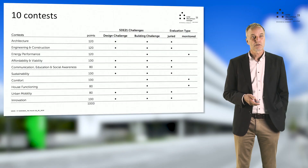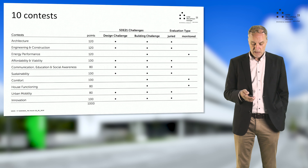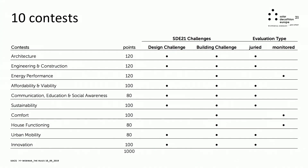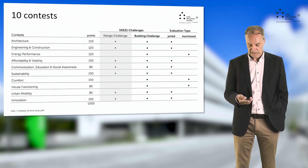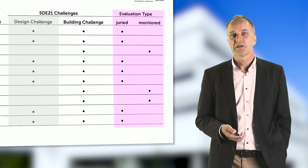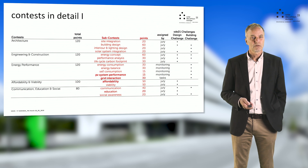As it is a Solar Decathlon, we have 10 contests, and you have recognized all these contests with their points in the call already. You can see in this table how these contests split up for the design challenge and the building challenge. Of course all contests are important for the building challenge, but we can only monitor the demonstration unit — not the whole building. So all jury contests will cover the design challenge as well as the building challenge. The new thing is that juries will definitely take into account the full building design, not only the demonstration unit design.